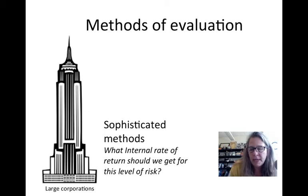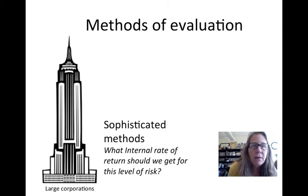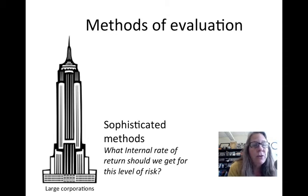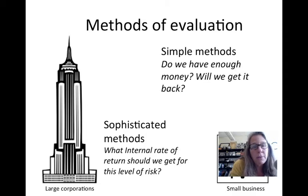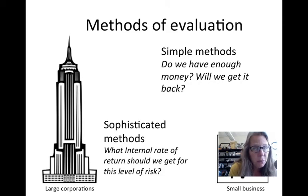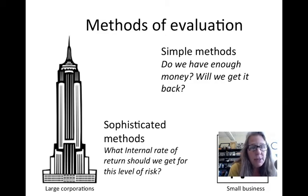Different kinds of companies use different evaluation methods. At very sophisticated, large corporations, they often use academically rigorous methods, asking questions like what internal rate of return should we be getting for this level of risk on this project. When I was working at a large oil company, I was in the department that looked at exactly how we should be evaluating things. At smaller companies — like a one-man show or a garage business — decisions are made in pretty simple terms, partly because you may not have enough money to make expenditures.